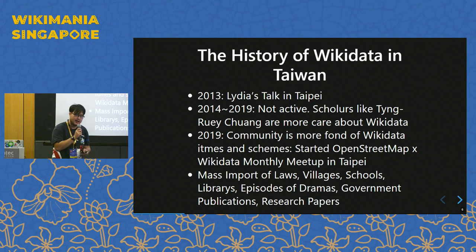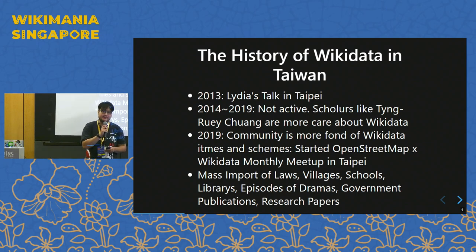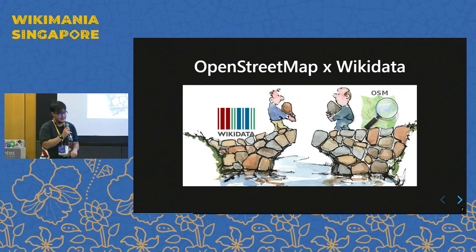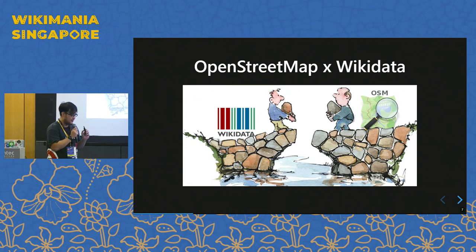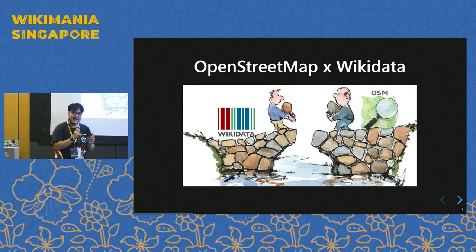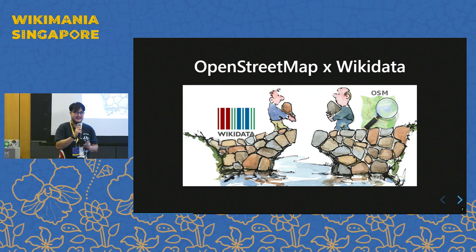We also started the OpenStreetMap and Wikidata monthly meetup in Taiwan, held in Taipei. If you know that OpenStreetMap and Wikidata are quite closely related, in Taipei we have a community meetup together each month.